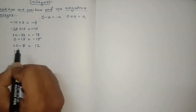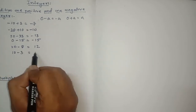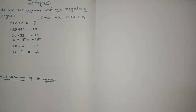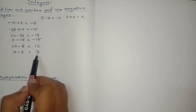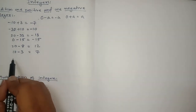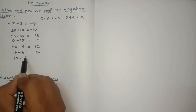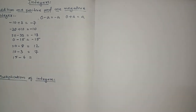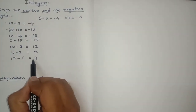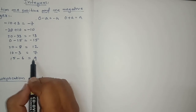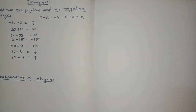Another example: 10 minus 3 will be plus 7. The sign of the bigger number is plus, that's why plus 7. Similarly, 0 plus 9 is 9 — I am not writing the plus sign because if the plus sign is there we don't need to mention it. Keep in mind.